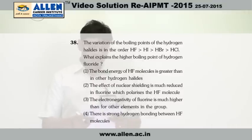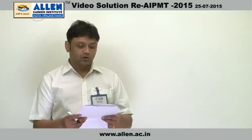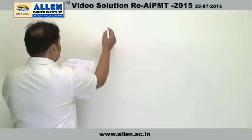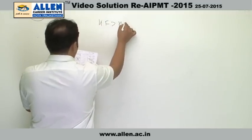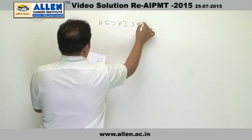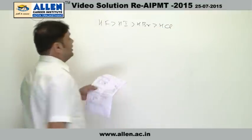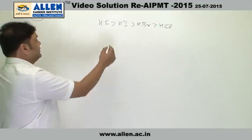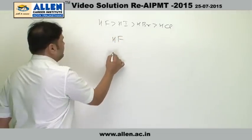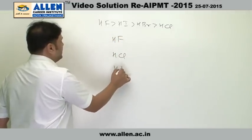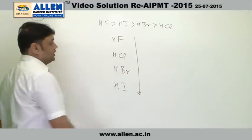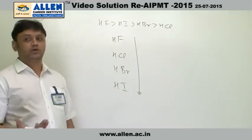Question number 38: the variation of the boiling points of hydrogen halides is in the order HF > HI > HBr > HCl. We are asked for the most suitable reason for this. As we know, in the halides HF, HCl, HBr, and HI, their molecular weight is increasing. With the increase in molecular weight, the boiling point also increases.